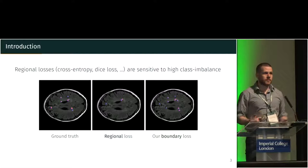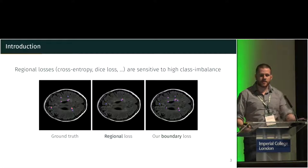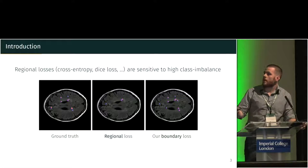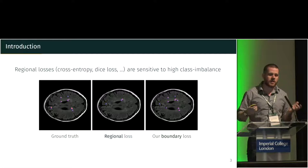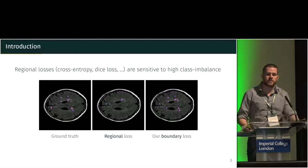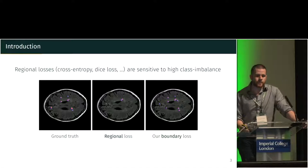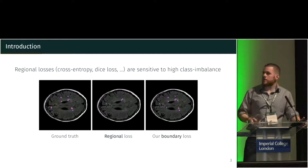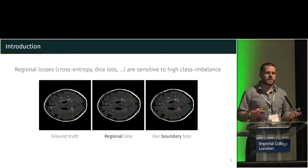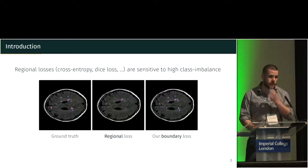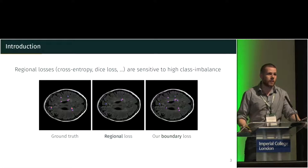Regional losses such as cross-entropy, dice loss, and derivatives are usually really sensitive to high-class imbalance. In this example, most of the image is background and there are only a few areas containing our object of interest, which is a brain lesion. When using regional loss, the network usually struggles to detect anything at all, or many parts are missing. What we are presenting today helps to recover parts of the missing object of interest.